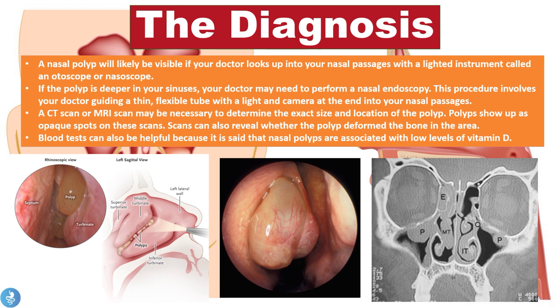Now let's explore the diagnosis of nasal polyps. A nasal polyp will likely be visible if your doctor looks up into your nasal passages with a lighted instrument called an otoscope, giving a clear view of the abnormal growth within the nasal cavity. If the polyp is deeper in the sinuses, the doctor may need to perform a nasal endoscopy — a procedure involving a thin flexible tube with a light and camera guided into the nasal passages.